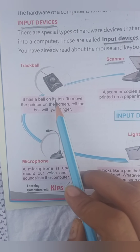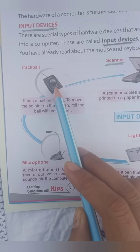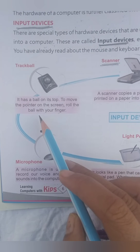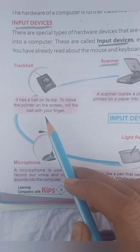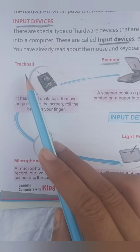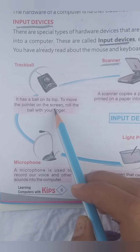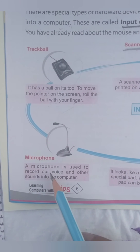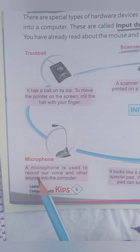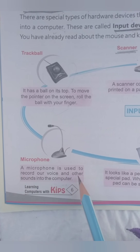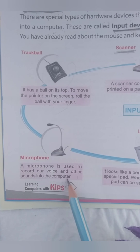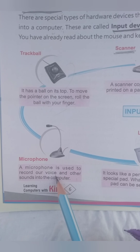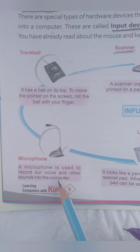Next is the trackball. It has a ball on its top. To move the pointer on the screen, roll the ball with your finger — like you drag a mouse. So we give input in the trackball using a ball. Microphone: a microphone is used to record your voice and other sounds into the computer.